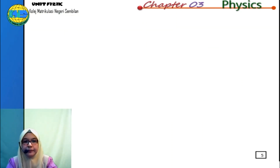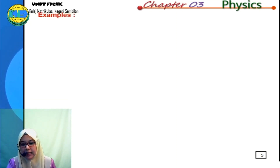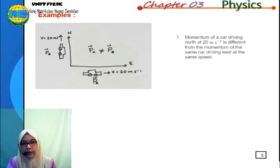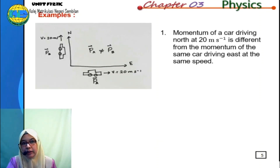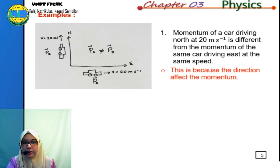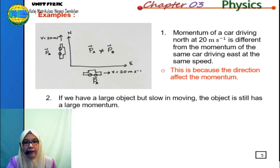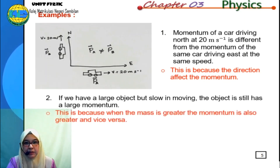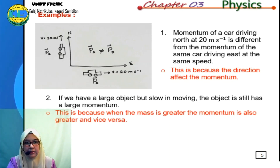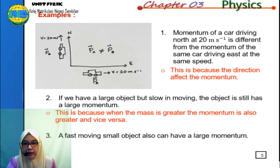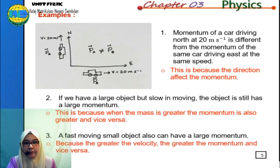There are a few examples showing that momentum has magnitude and direction. First, the momentum of a car driving north at 20 meters per second is different from the momentum of the same car driving east at the same speed, because direction affects momentum. Second, a large but slow-moving object still has large momentum, because when mass is greater, momentum is also greater. Third, a fast-moving small object can also have large momentum, because greater velocity means greater momentum.